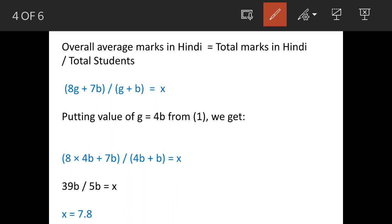For marks in Hindi: total marks in Hindi divided by total students. Marks in Hindi are 8 for girls and 7 for boys. So (8g + 7b) / (g + b) = x. This is what we have to find out.